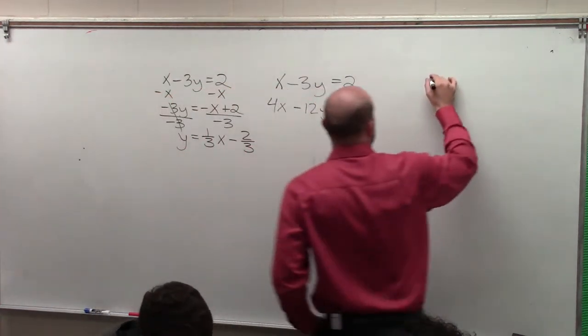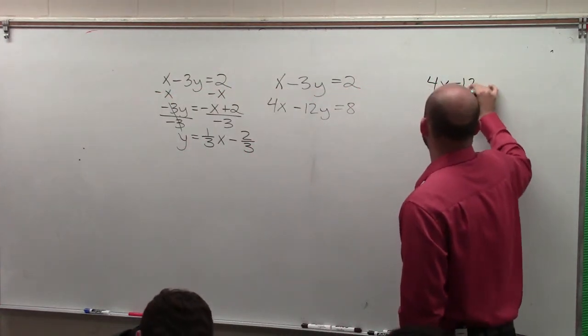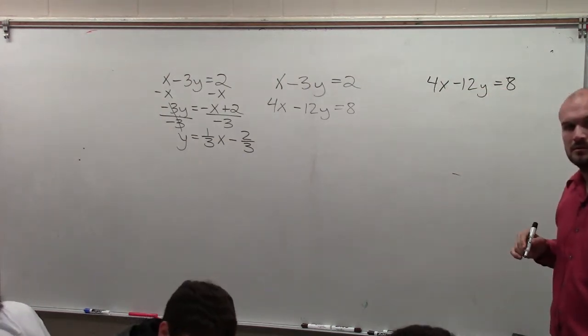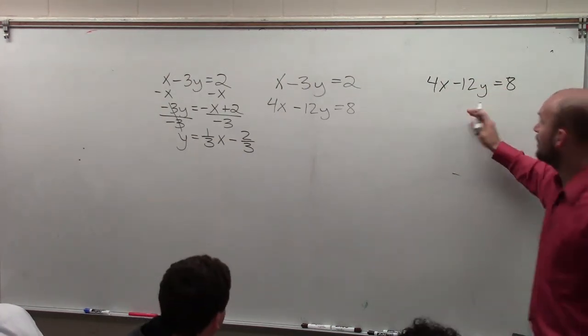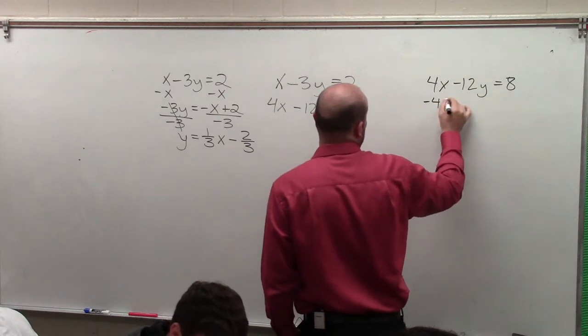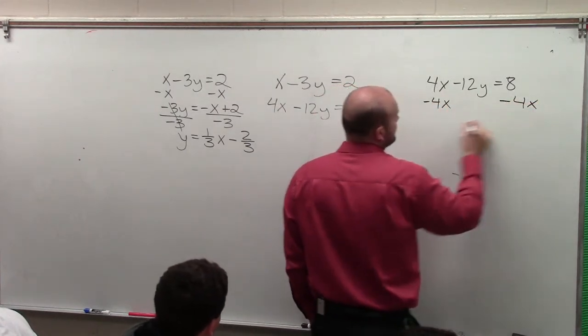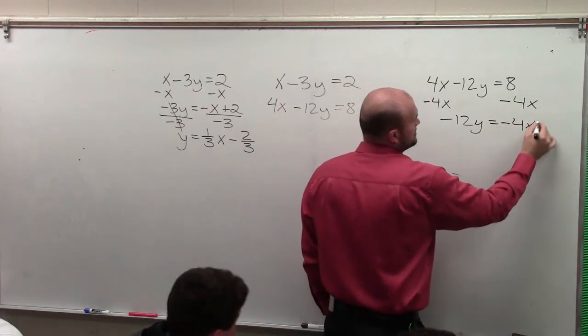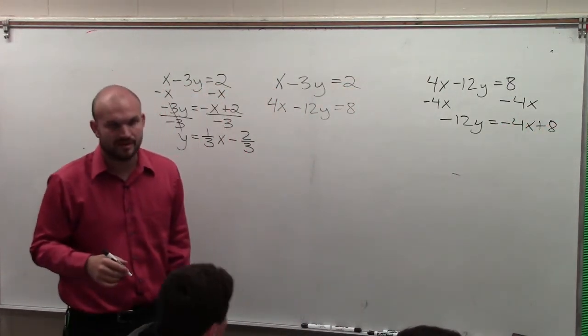Then I'll go ahead and graph this one: 4x minus 12y equals 8. And now, to solve for y, I'll subtract the 4x. Negative 12y equals negative 4x plus 8. Does everybody follow me so far in what I've done? We're just solving for y, basically.